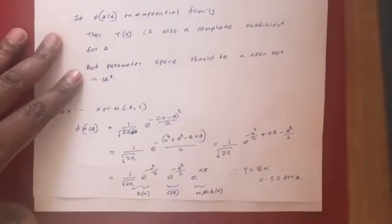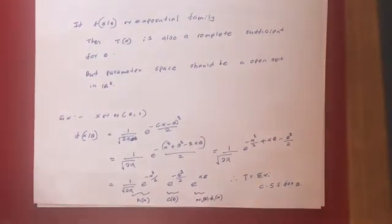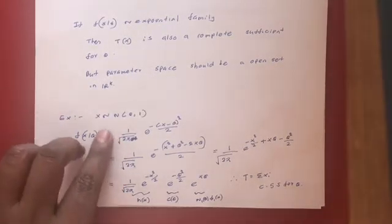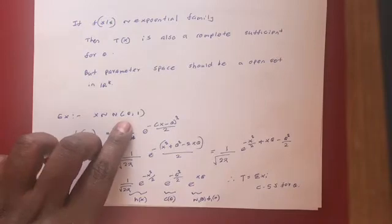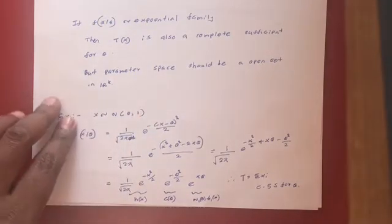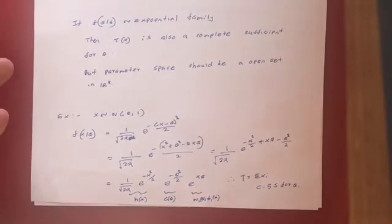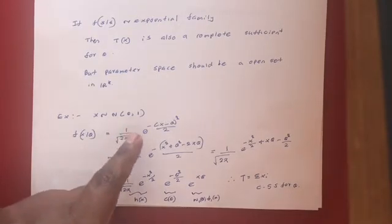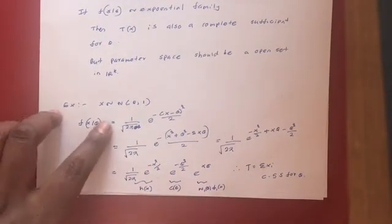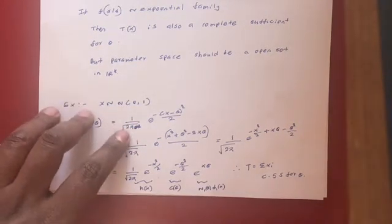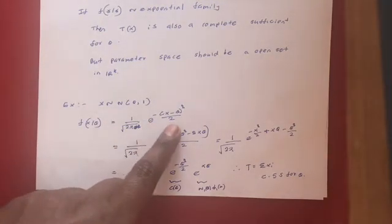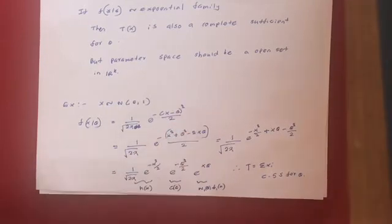To understand this, we will do a couple of examples. Let's say you have a variable which is normally distributed with mean θ and variance 1. So if X is normally distributed with mean θ and variance 1, then you can write your PDF in this form: 1 over square root of 2π times e to the power of negative (x − θ)² over 2.